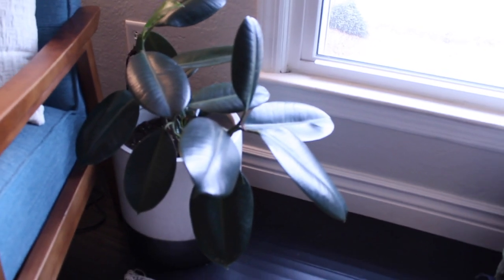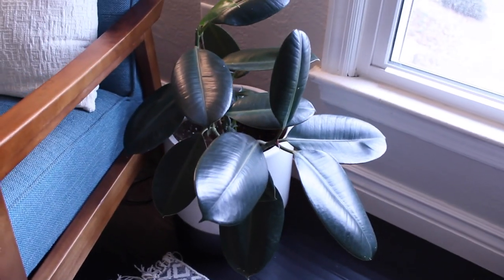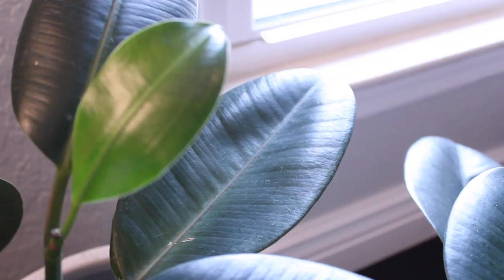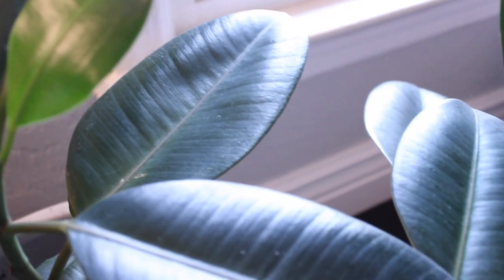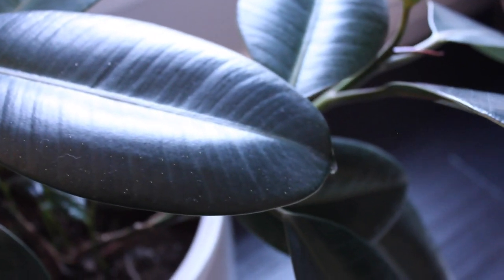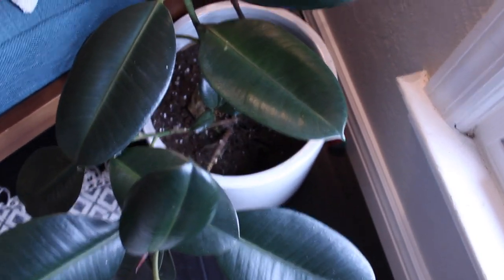The ficus elastica is in a spot with direct sunlight. As you can see, this is a Western facing window and it has some new growth coming in. This is also the plant that my cat Ruby likes to play in the most because it is essentially a big pot of dirt for her to dig in.